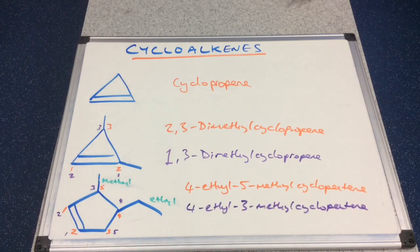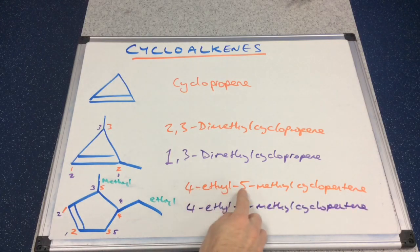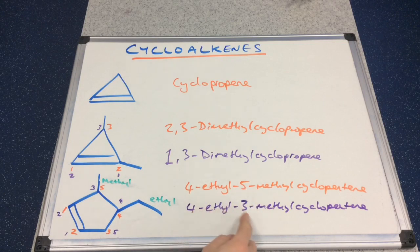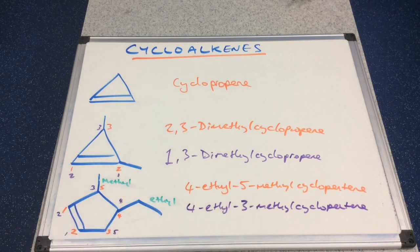So do we go with orange — four-five — or purple — four-three? It's obviously the purple one: 4-ethyl-3-methyl-cyclopentene.